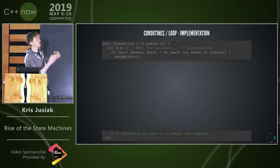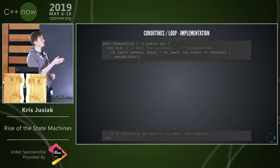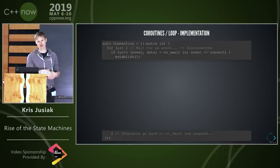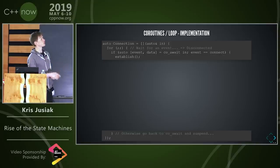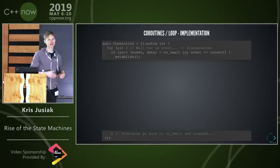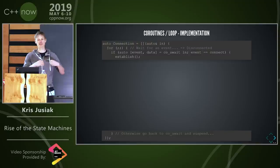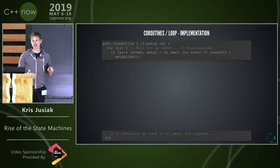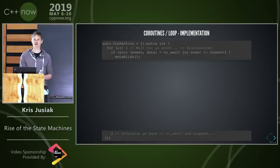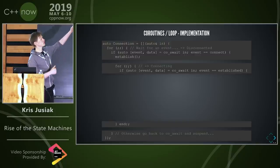Let's try to implement the state machine using coroutines. The first thing is to start with a for infinite loop — that's already different. Then we do this co_await call, which is the new keyword in C++20 — that's when we suspend or resume. co_await returns the event and data when the function is resumed. We verify whether the event is 'connect', call establish, and the for loop means: if we're resumed but the event is not connect, we stay in the same state and go back to the loop, but that won't be a hot loop because co_await suspends us again.